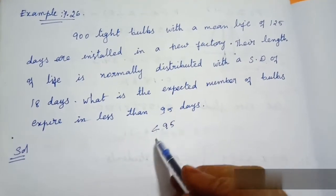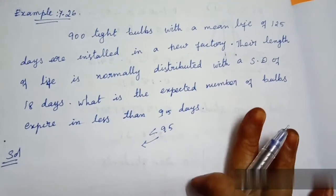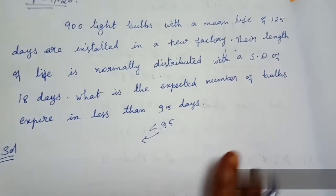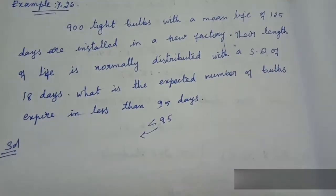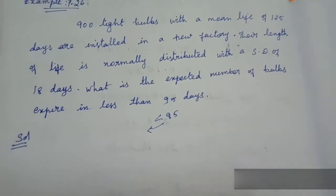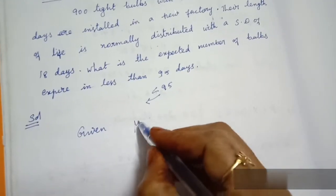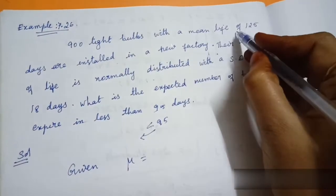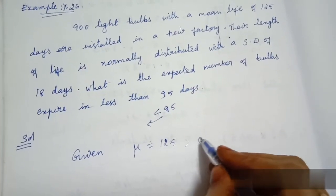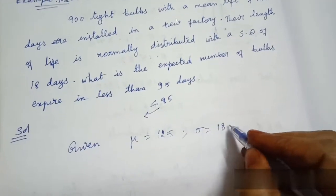We want the expected number of bulbs lasting less than 95 days out of 900 bulbs. Suppose one bulb lasts 95 days — we need to find the probability for a single bulb first, then scale to 900 bulbs. Sigma is 18.